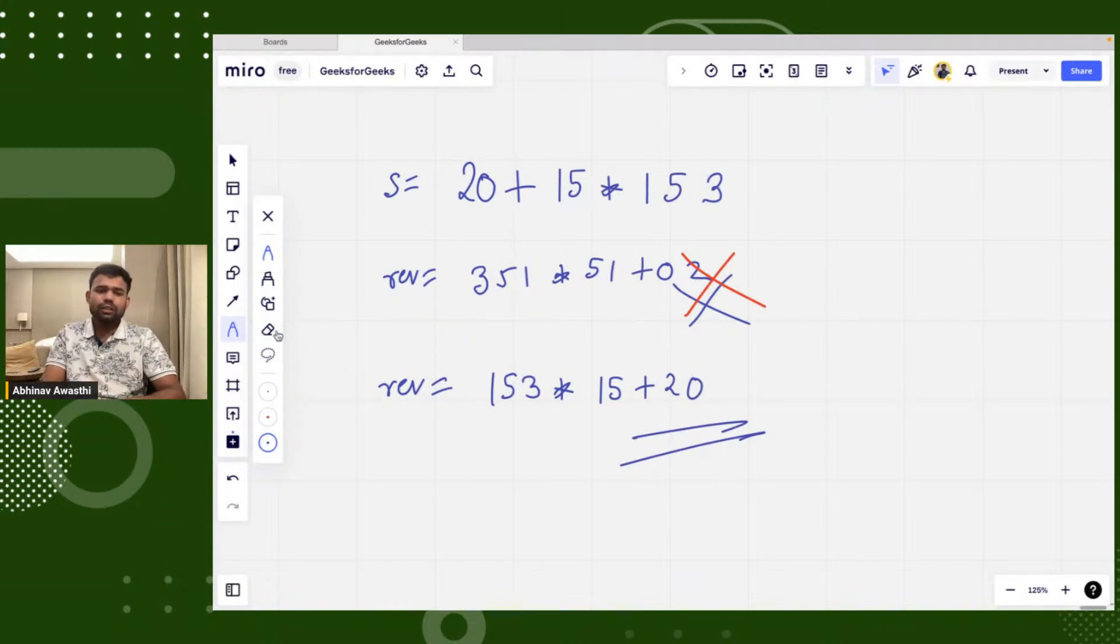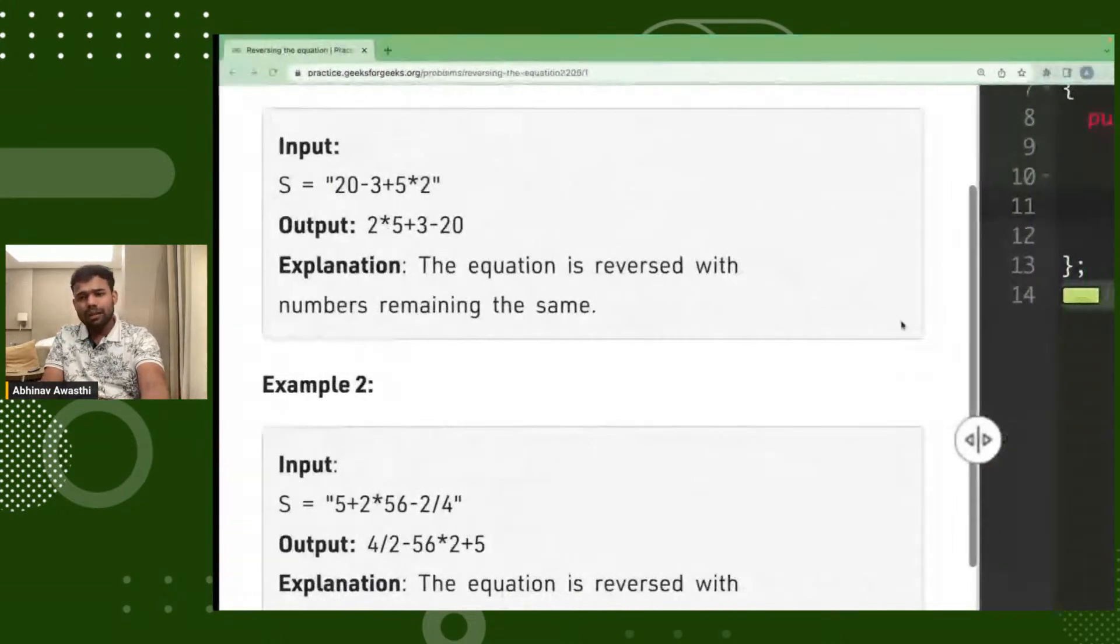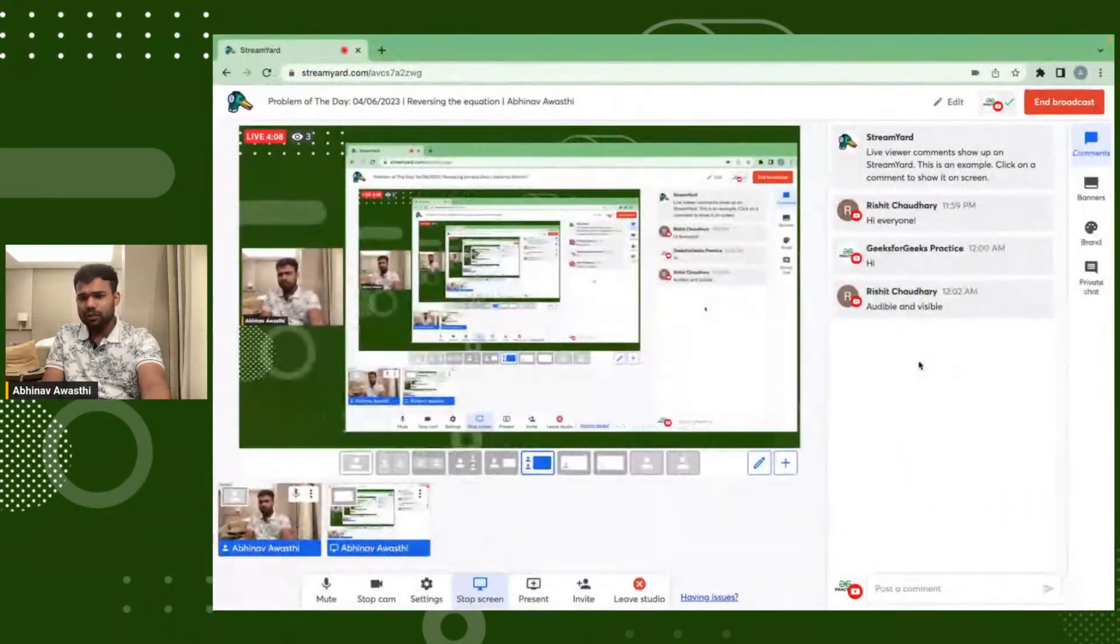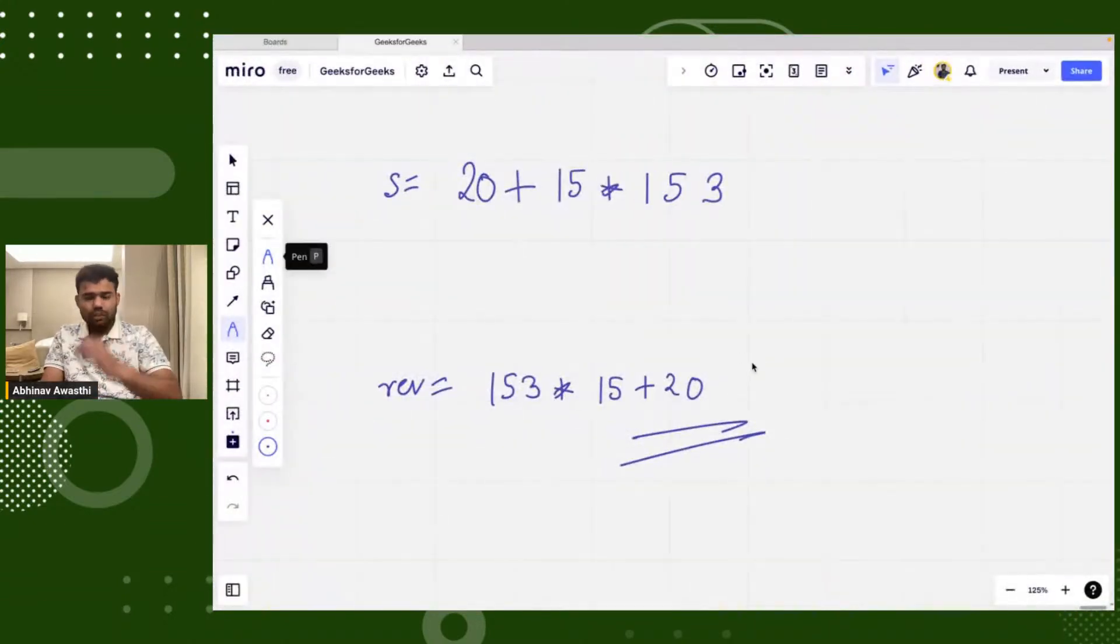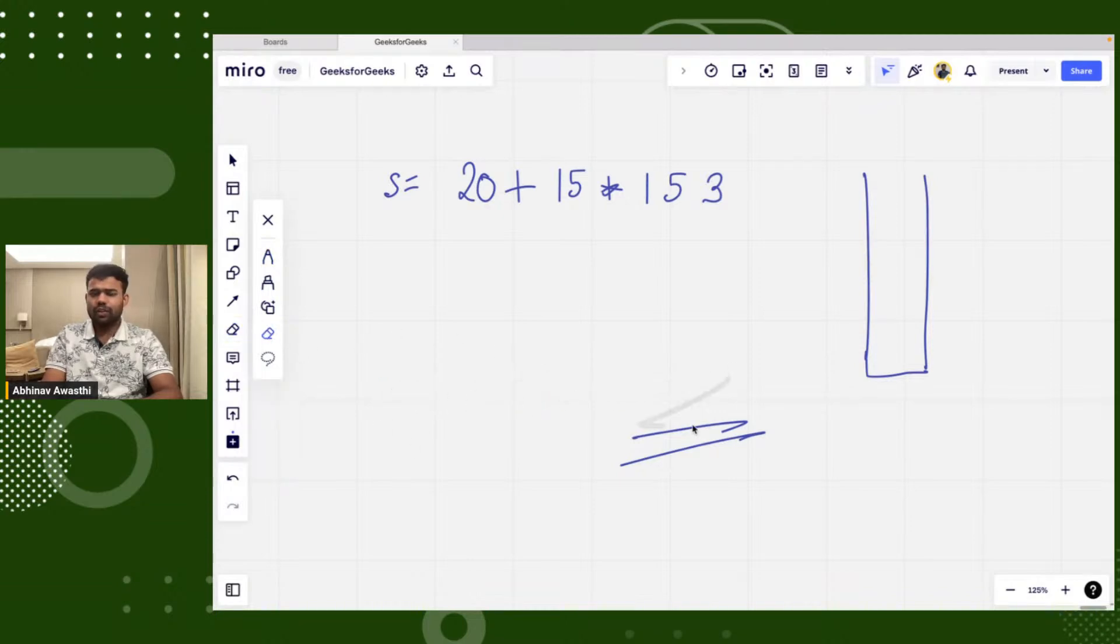So if you will see how we will solve this particular problem. I hope that the problem statement is clear to everyone. Please tell if it is clear. So what we will do is we will be taking a stack. We will be taking a stack here and we will be taking an answer or we can say a reverse vector, which will be initially zero. Now what we will do - let me index it. Now we will start from the back from i minus 1.